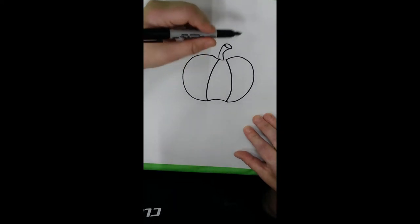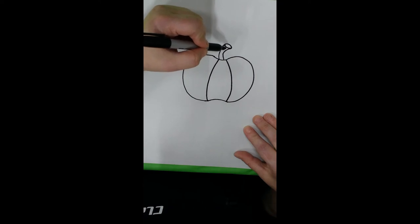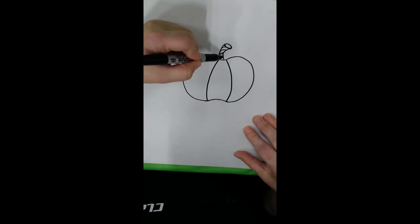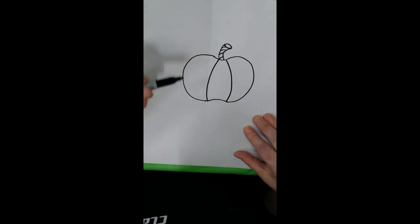To give more detail to the stem of our pumpkin, we'll draw four curved lines within the stem: one, two, three, and four. Now it kind of looks like wood a little bit.